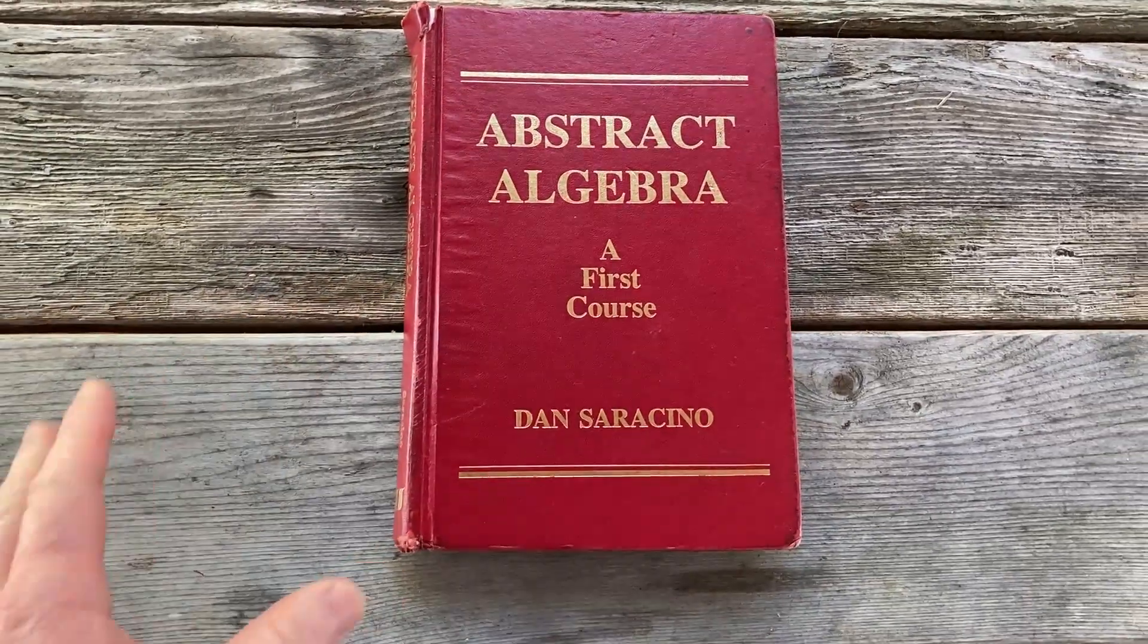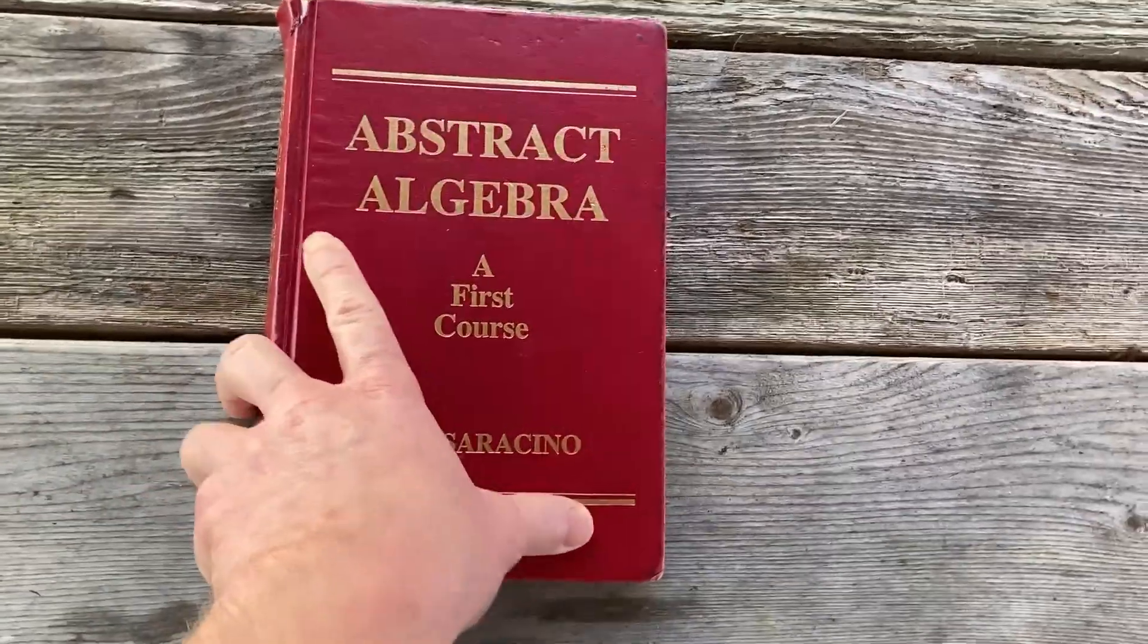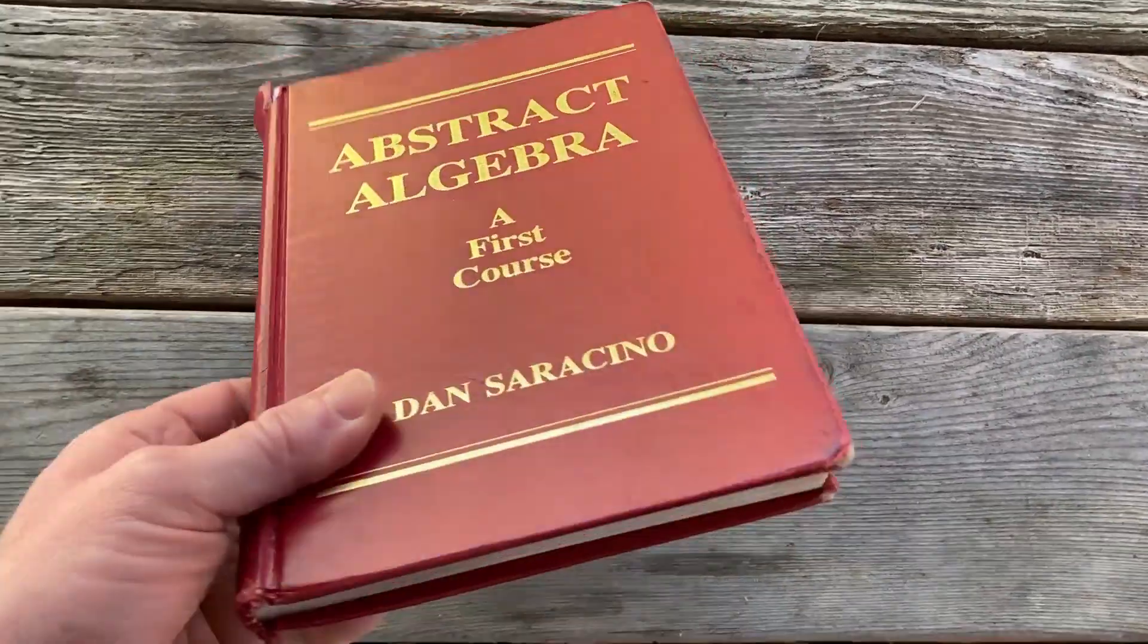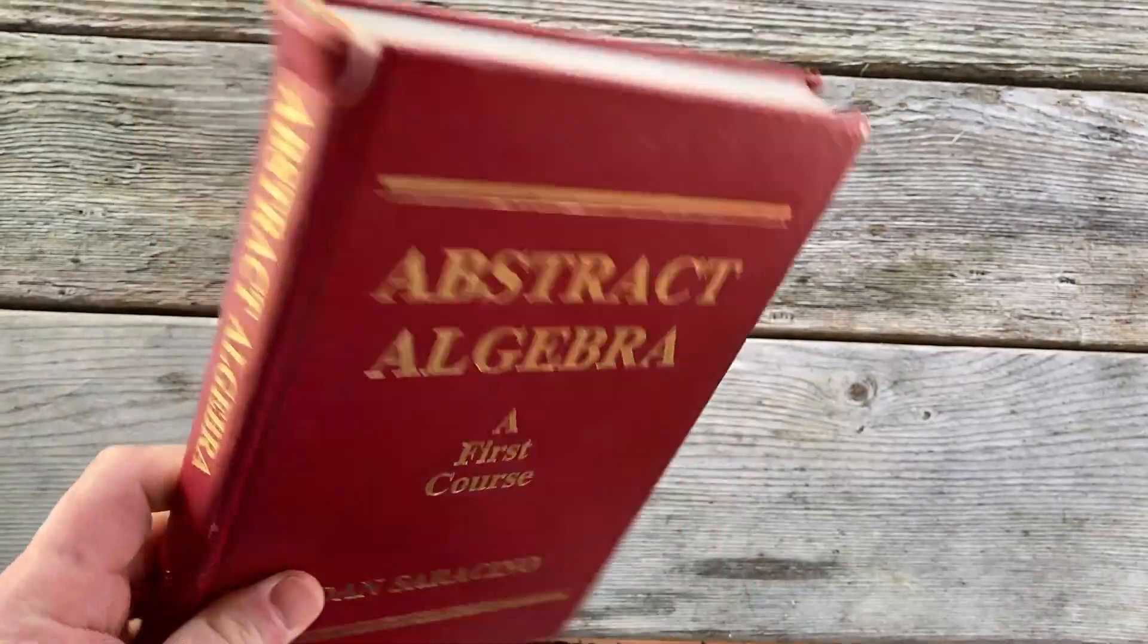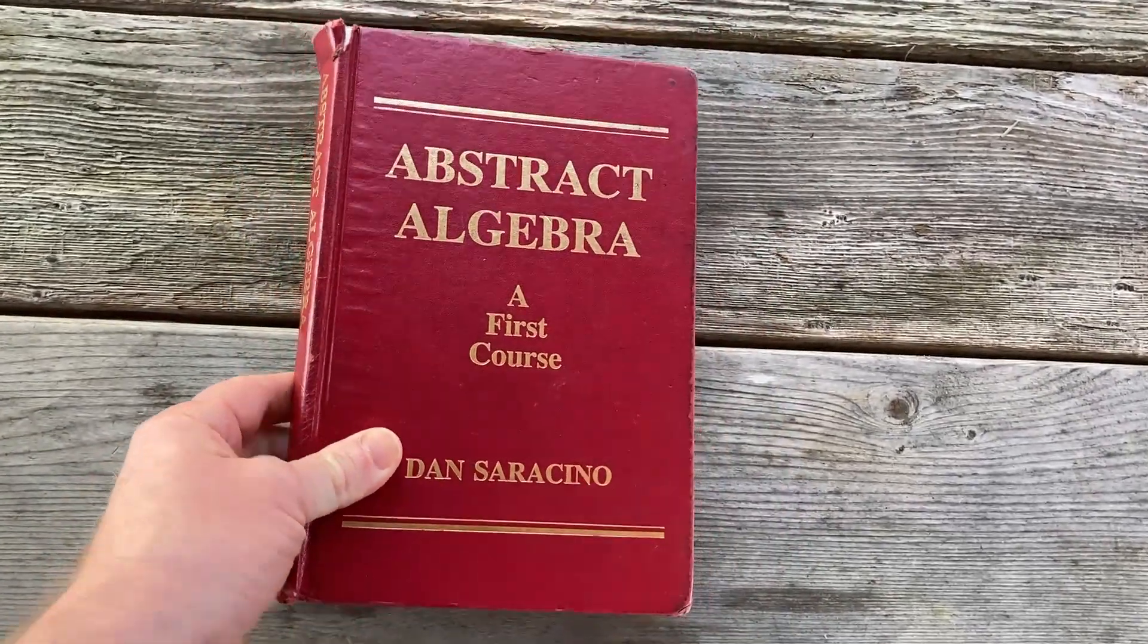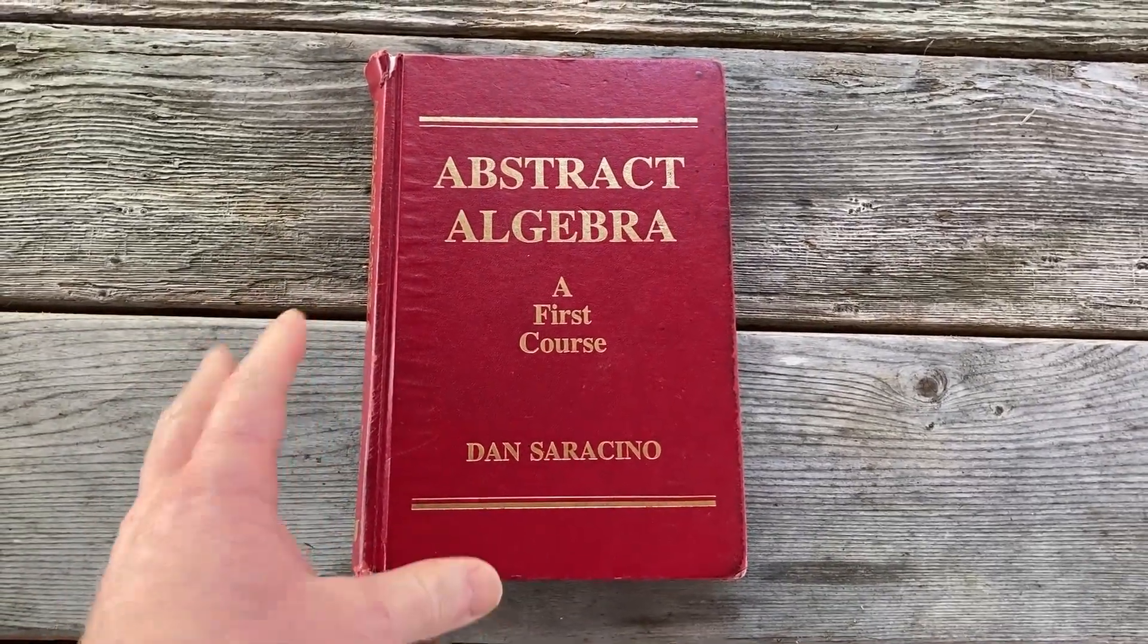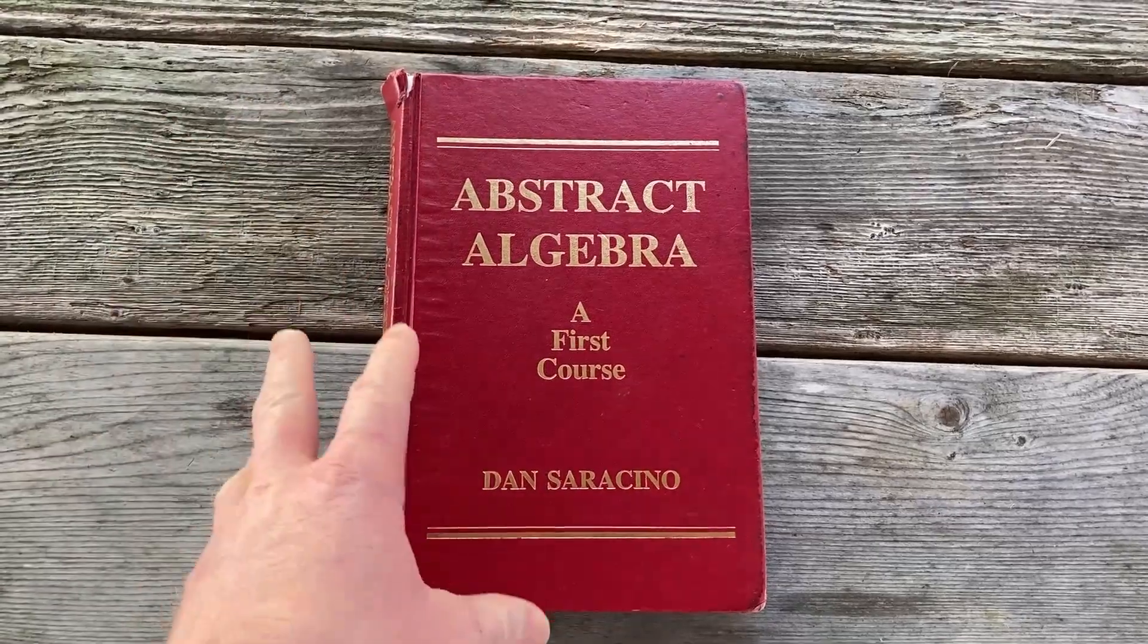This book here is the book that I actually used to first learn abstract algebra. This is one of the few math books that I've read in its entirety. I've read every single word in this book and I've done most of the exercises. It's a great book. Its only flaw is that it doesn't cover enough material, so if you have to learn more abstract algebra, you're going to need more books.